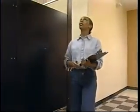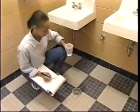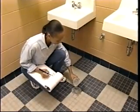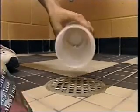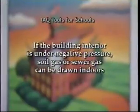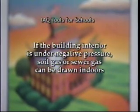I'll go to the kitchen area and check the combustion appliances. I'll check the bathroom and maintenance supplies, and I'll meet you in the hallway. When checking the bathrooms and general plumbing areas, make sure that the exhaust fans are operating. Be sure that all drains have traps and are filled with water. Drain traps can cause IAQ problems when water in them evaporates due to infrequent use. If the building interior is under negative pressure, soil gas or sewer gas can be drawn indoors through a dry drain trap.